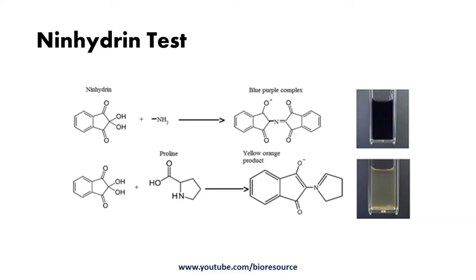Ninhydrin is most commonly used as a forensic chemical to detect fingerprints, as amino acids react with ninhydrin to give a characteristic purple color. This makes it very useful in forensics for analyzing fingerprints.